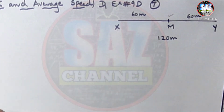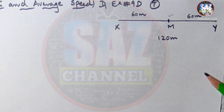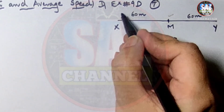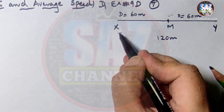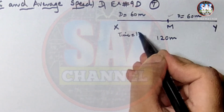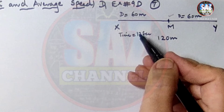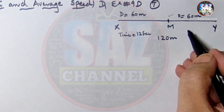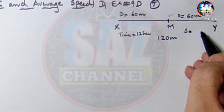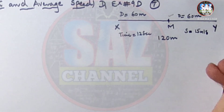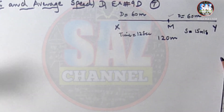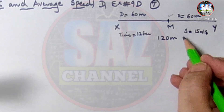The object travels from X to M in 12 seconds. The distance from X to M is 60 meters and from M to Y is 60 meters. From M to Y, the average speed is 15 meters per second. We need to find the time taken to travel from M to Y.